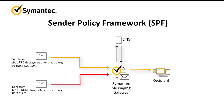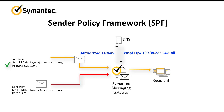For Sender Policy Framework, or SPF, each domain owner uses a DNS text record to identify which email servers are authorized to send mail from the domain. When a message is received, Semantic Messaging Gateway looks up the server information in the DNS record. If the mail server is listed, the message is accepted. If the mail server is not listed, SPF authentication fails and the message is blocked.